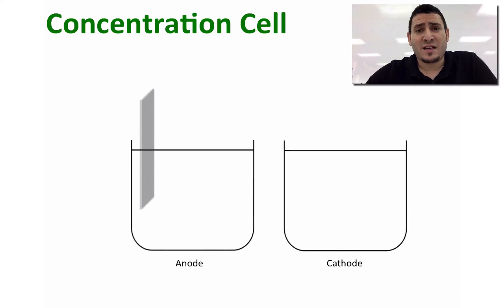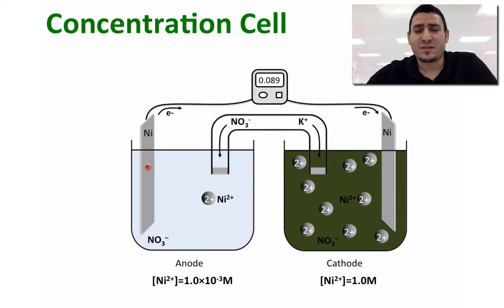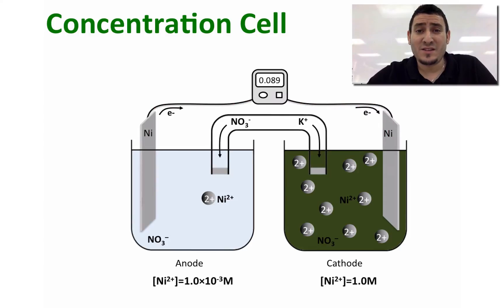A concentration cell is prepared the same way as a galvanic cell. By definition, a cell in which both compartments contain the same component but at different concentrations is called a concentration cell. In the cell described here, the concentrations of nickel in both compartments are 1 molar and 1.0 times 10 to the power minus 3 molar.